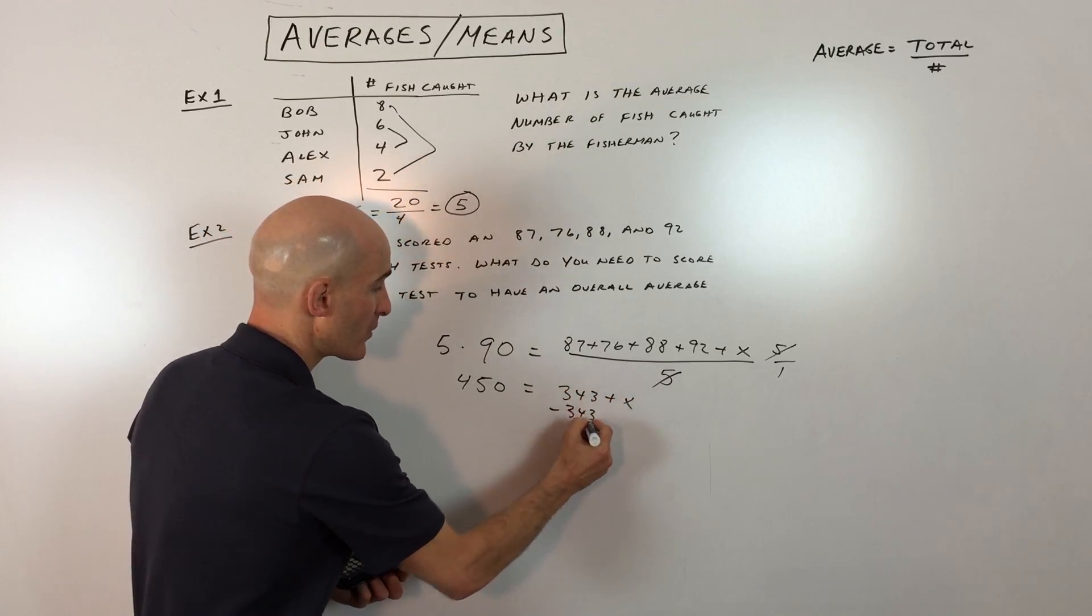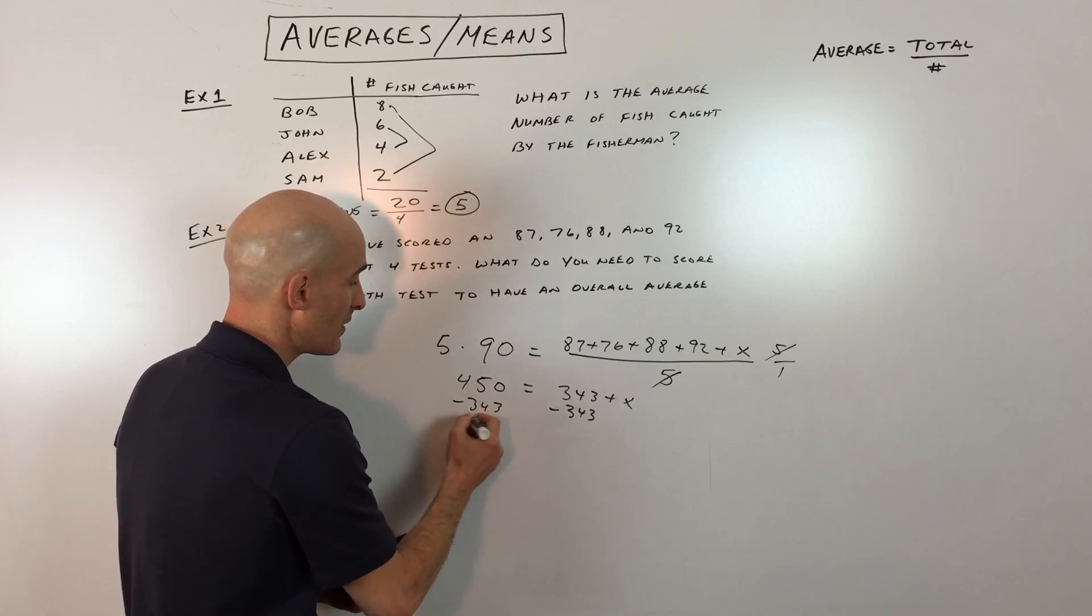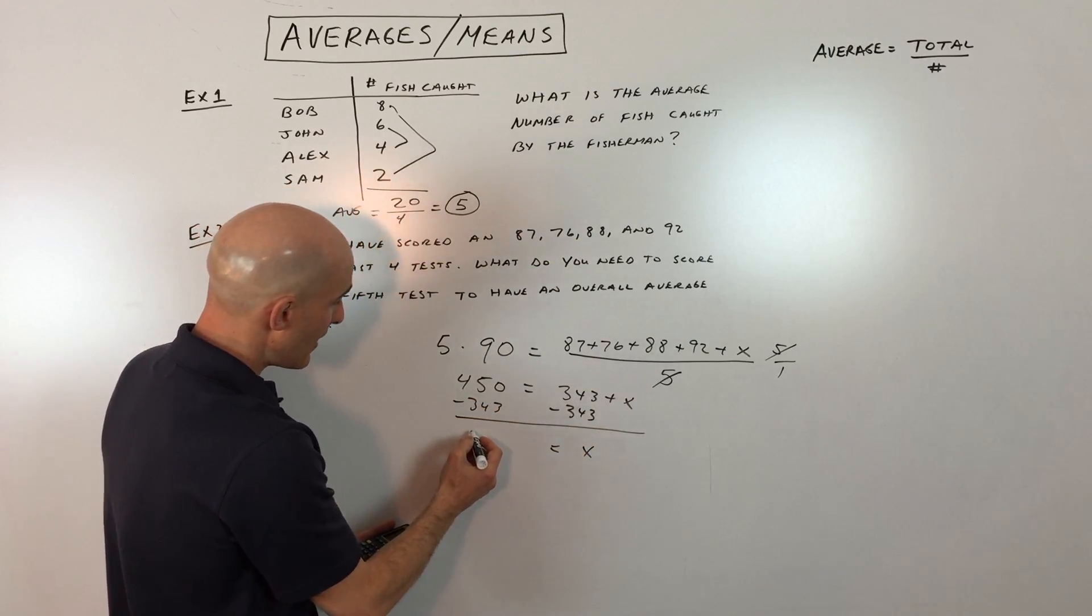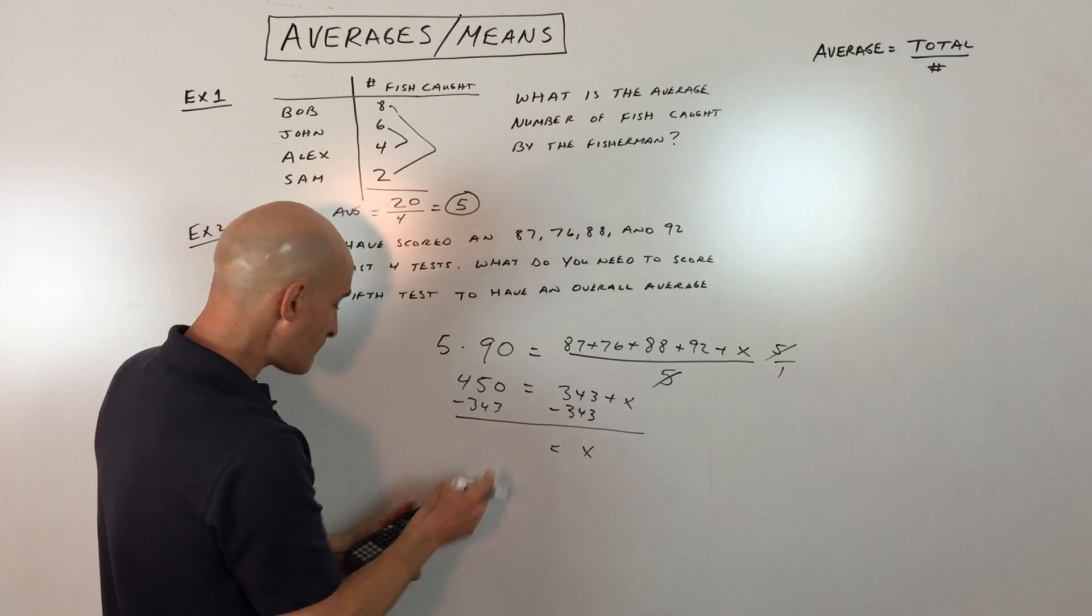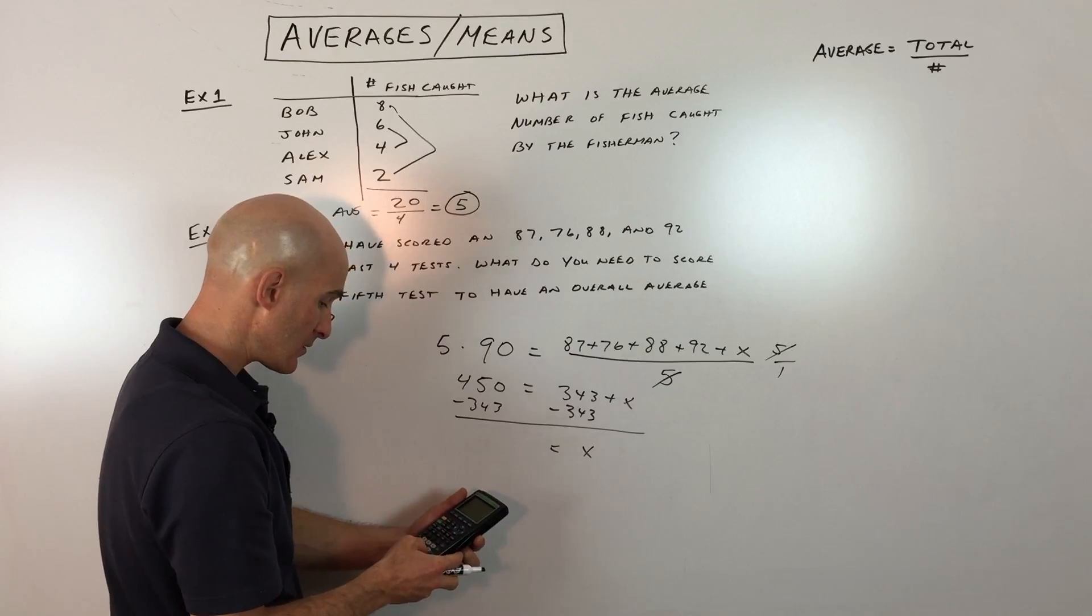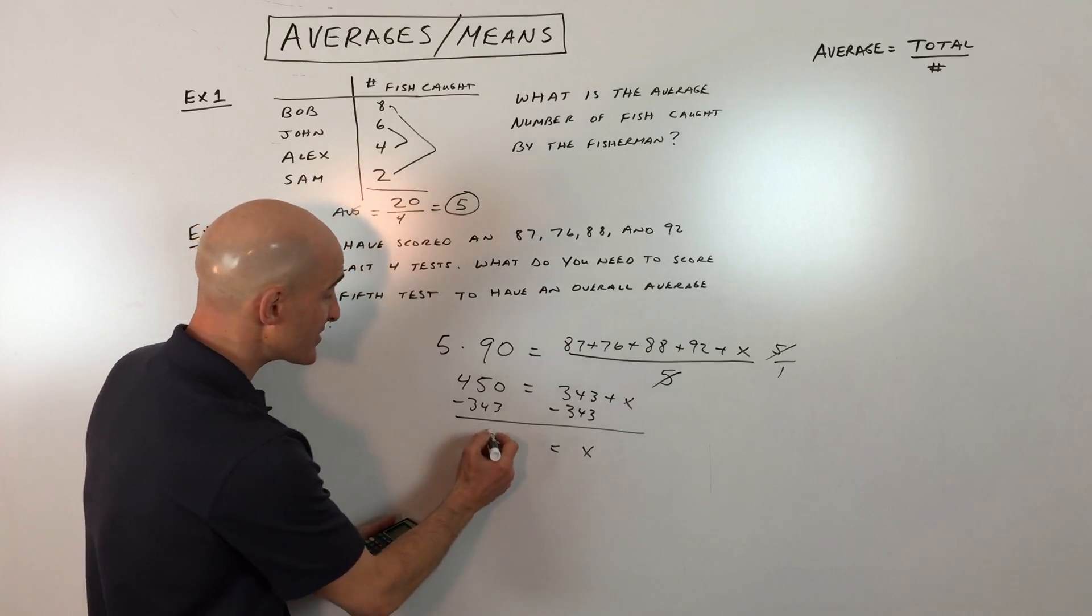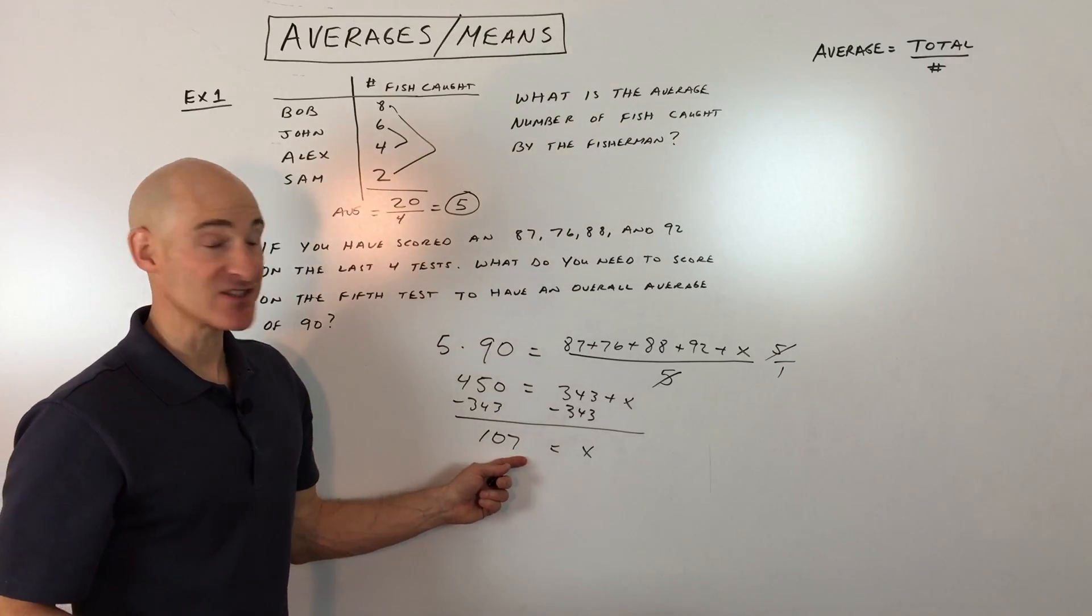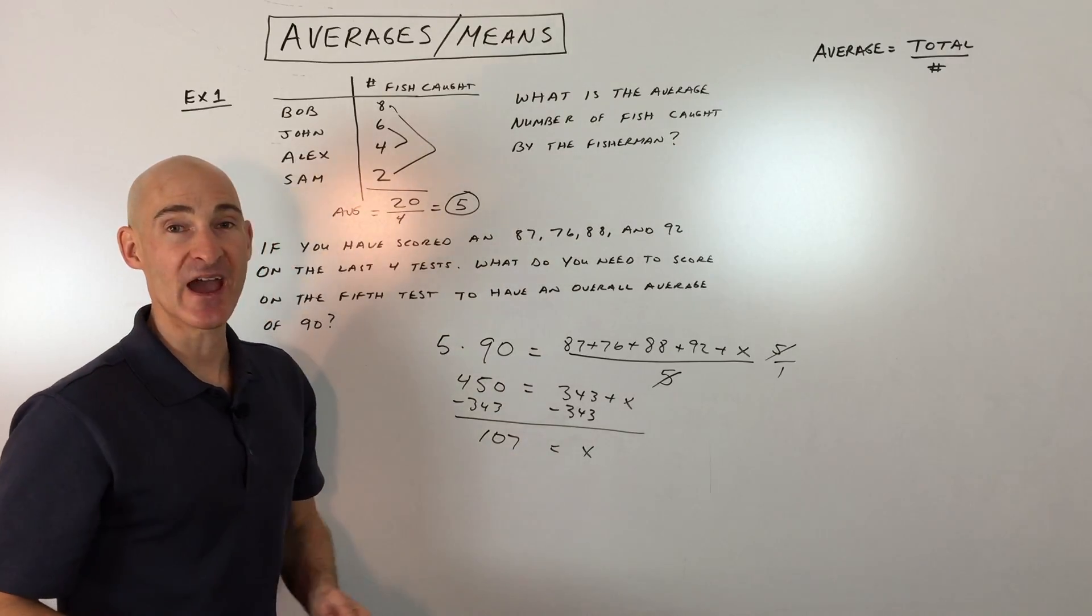And of course, if we subtract 343 from both sides, X equals... let's see. What does that come out to? Let's just do it on our calculator. Minus 343. It's 107. So you would definitely have to get the extra credit on this last test to boost your grade up to a 90.